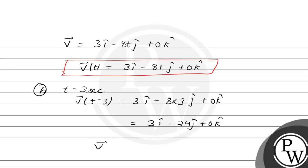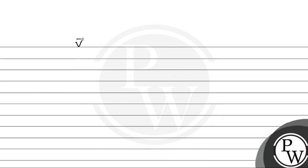The magnitude of this velocity vector will be √(3² + 24²), which equals √585, coming out to be approximately 24.18 m/s.